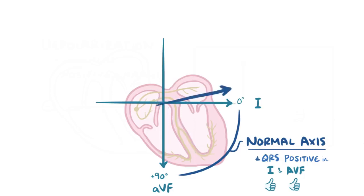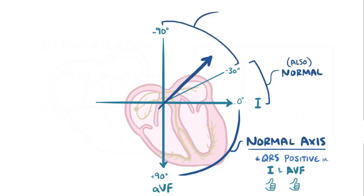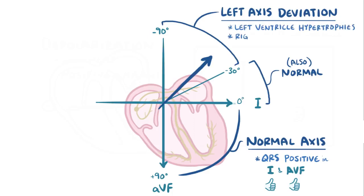If the vector is positive in lead 1 and negative in AVF, then it's in this quadrant, and it could also be normal if it's between 0 and negative 30 degrees. If it's between negative 30 and negative 90 degrees though, it could be considered left-axis deviation. Left-axis deviation can happen when the left ventricle hypertrophies, or when the right ventricle gets damaged and loses healthy tissue.